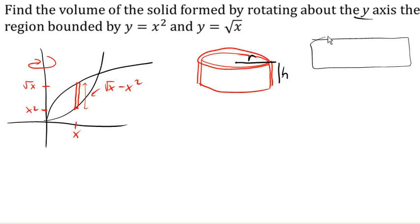then the height h is here, and this length corresponds to the circumference of the shell. The circumference of a circle is 2 pi r. So the volume of this shell will be 2 pi r times the height h times this little bit of thickness, which is our dx.